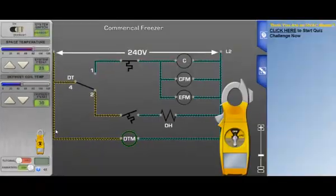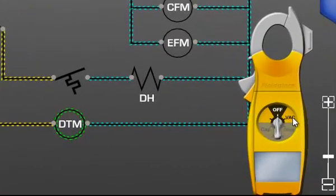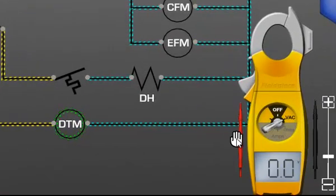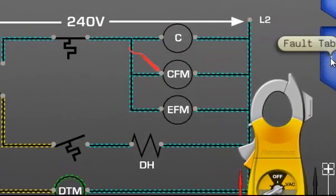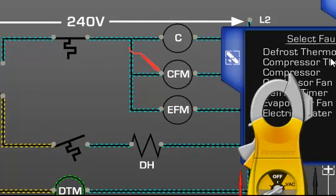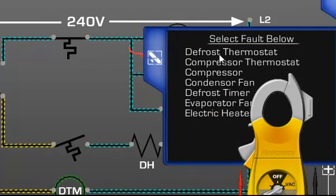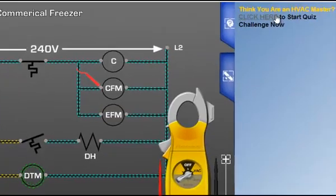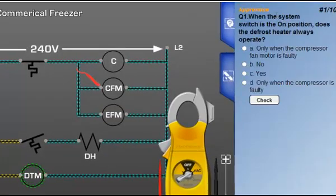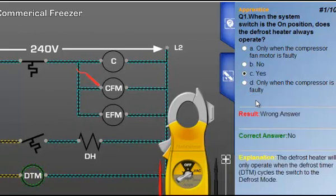Use the multimeter to assess the electrical characteristics and faults of the diagram. Set a fault on key components to see how the diagram responds. There is also a challenge quiz that will assess the user's understanding of the diagram and associated concepts.